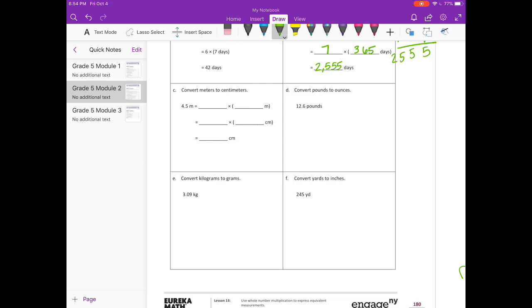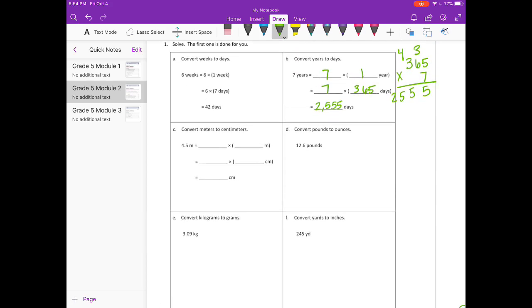C. Convert meters to centimeters. 4 and 5 tenths meters equals 4 and 5 tenths times 1 meter. And 4 and 5 tenths times how many centimeters? We need to know how many centimeters are in a meter. That would be 100. And 4 and 5 tenths times 100, we can easily do that by shifting the digits. So I'm going to move the decimal point two places to the right because we're multiplying and we'll get 450 centimeters.